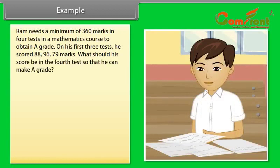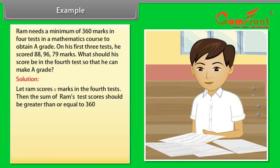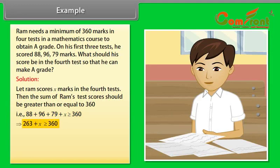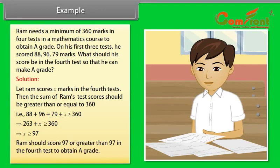Example: Ram needs a minimum of 360 marks in 4 tests in a mathematics course to obtain A grade. On his first 3 tests, he scored 88, 96, and 79 marks. What should his score be in the 4th test so that he can make A grade? Solution: Let Ram score x marks in the 4th test. Then the sum of Ram's test scores should be greater than or equal to 360. That is, 88 plus 96 plus 79 plus x greater than or equal to 360. It implies 263 plus x greater than or equal to 360, which implies x greater than or equal to 97. Ram should score 97 or greater than 97 in the 4th test to obtain A grade.